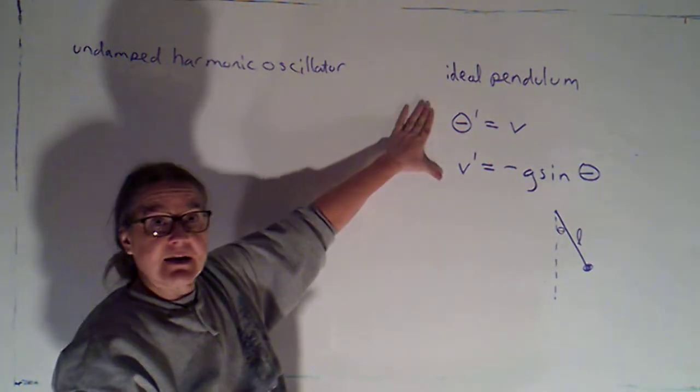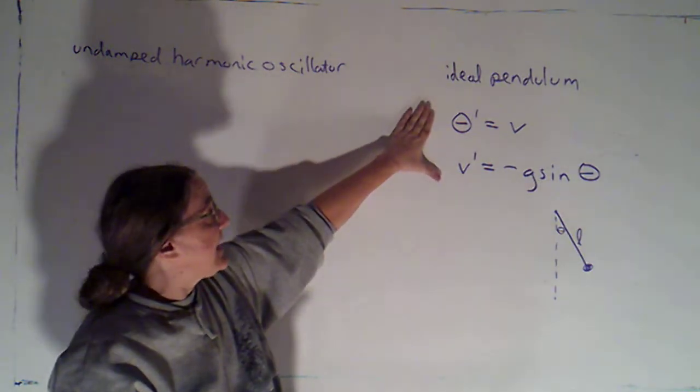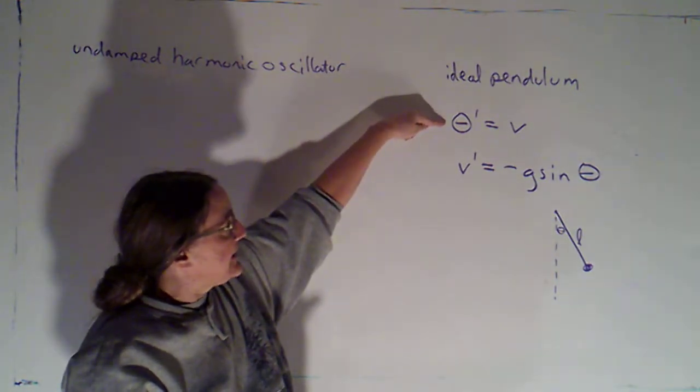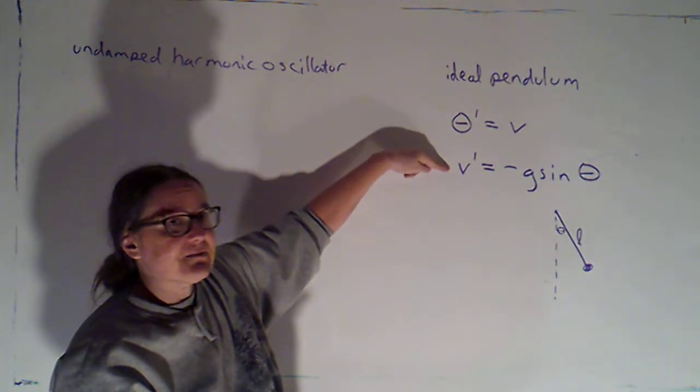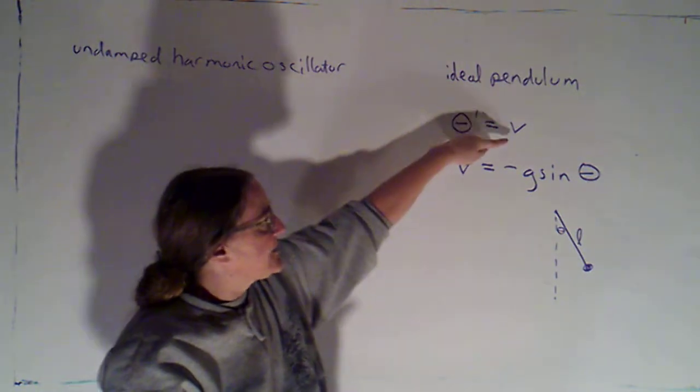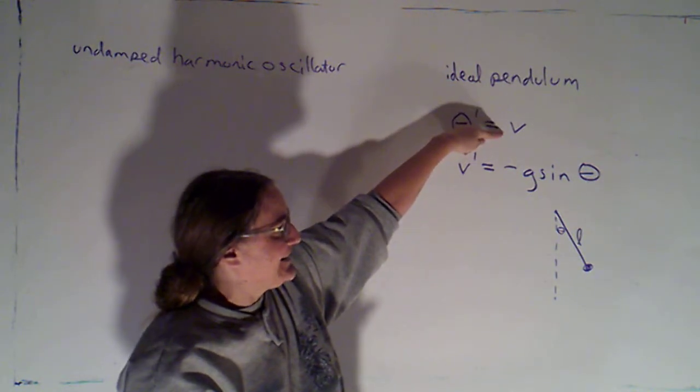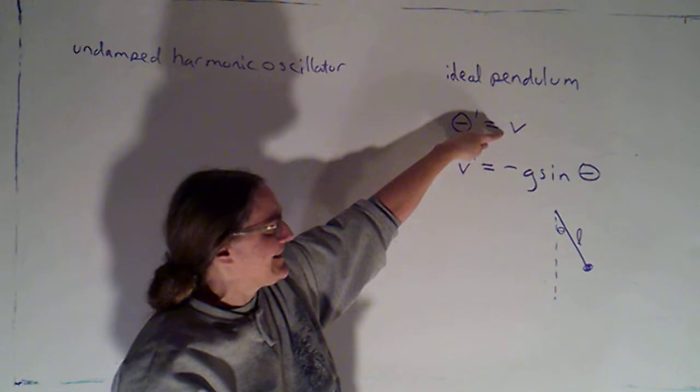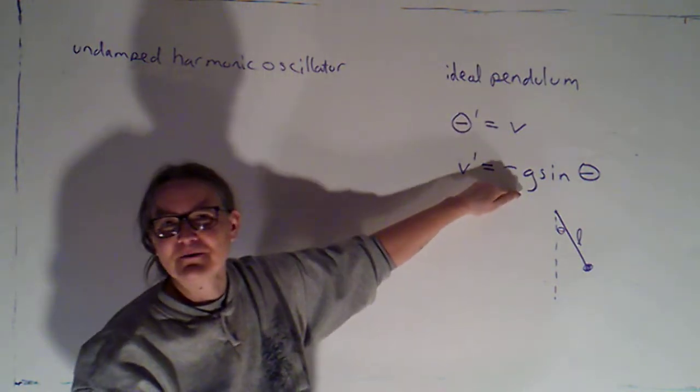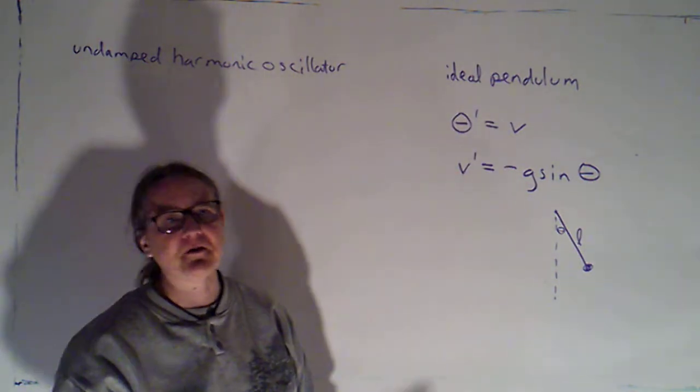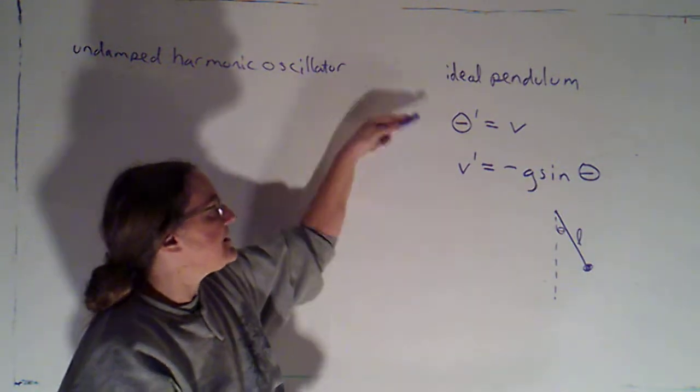And I can pretty easily see that it's going to be Hamiltonian because here theta is my variable and v is my second variable. If I take the partial of this with respect to theta, I get zero because there are no thetas in it. And if I take the partial of this with respect to v, I also get zero because there are no v's in it. So this is Hamiltonian.